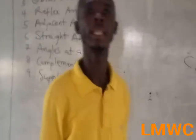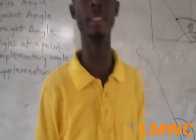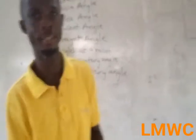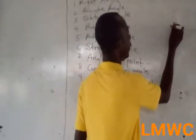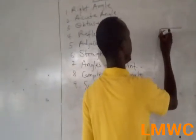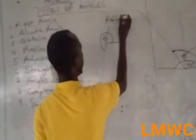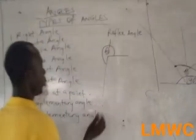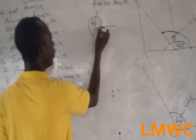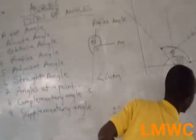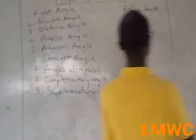The fourth angle is reflex angle. Reflex angle is an angle greater than 180 degrees but less than 360 degrees. So angle C-O-M is a reflex angle.